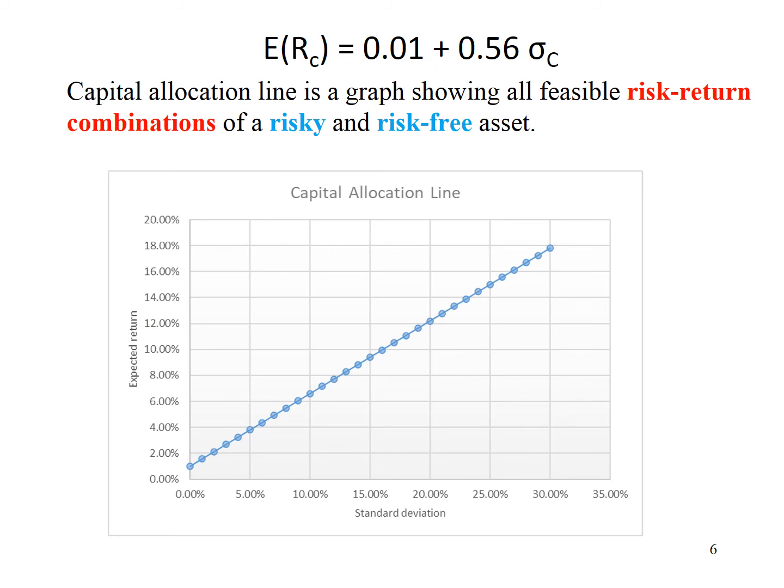This graph shows the capital allocation line of the example. The intercept of the capital allocation line represents the risk-free rate of 1%. The slope of the capital allocation line is represented by Sharpe ratio, which is 0.56.